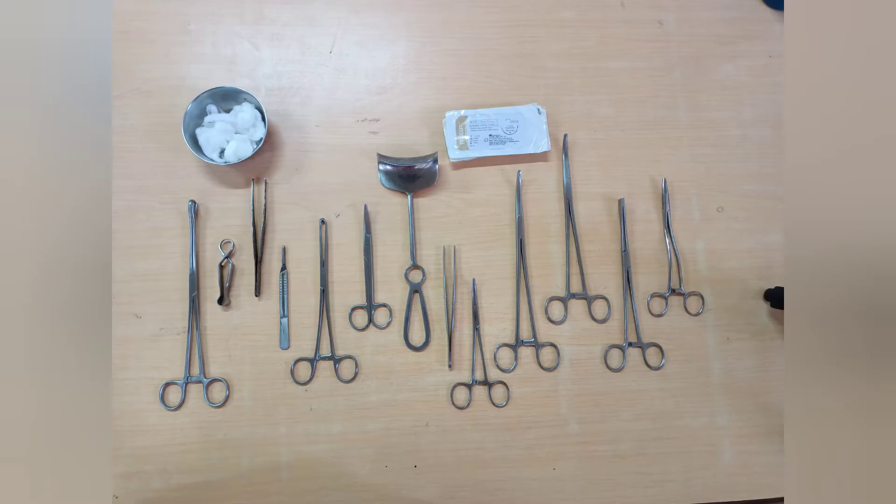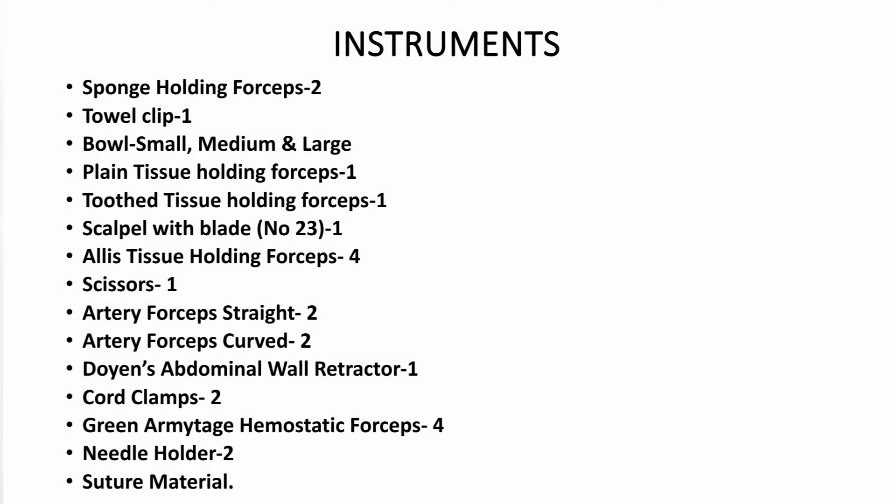The instruments for the caesarean section are: sponge holding forceps, towel clips, bowl, plain and tooth tissue holding forceps, blade with a scalpel, Alice tissue holding forceps, scissors, artery forceps, Doyne's abdominal wall retractor, cord clamps, Green Armitage forceps, needle holder, and some suturing material. This video is going to explain the stepwise requirement of these instruments.